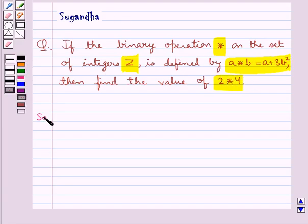Let's move on to the solution now. The binary operation star is defined by a star b equals a plus 3b square. We need to find the value for 2 star 4.